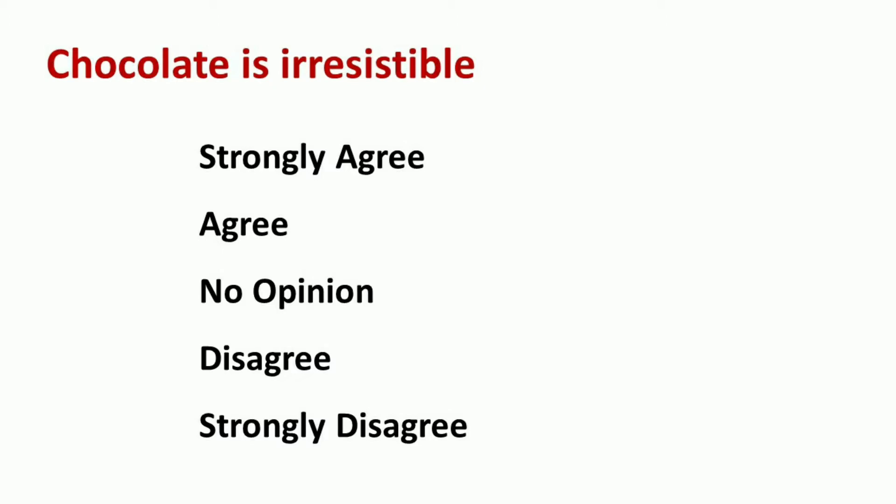Think of someone being asked to rate the statement: chocolate is irresistible. While rating this question, you can answer by selecting strongly agree, agree, no option, disagree, and strongly disagree. What is the interval between strongly agree and agree? It is practically impossible to put any kind of number to the interval. The gap between strongly agree and agree is likely to be much smaller or larger than the gap between agree and no option. So the ordinal scale places events in order — we can rank them — but there is no attempt to make the intervals equal.